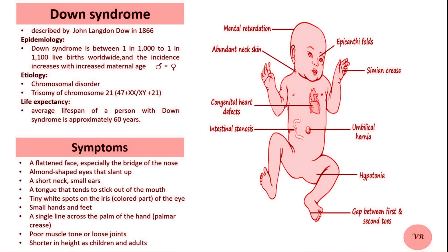Nondisjunction is an error that occurs during cell division, either during meiosis or mitosis, when chromosomes fail to separate properly. Nondisjunction is the main cause of chromosomal syndromes such as Down syndrome, Edwards syndrome, Patau syndrome, Turner syndrome, and Klinefelter syndrome.